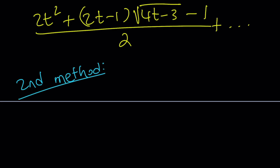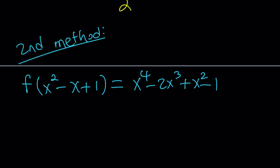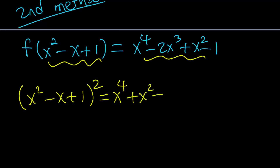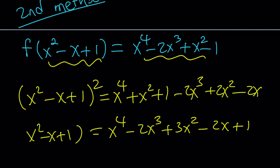The second method is much nicer and more elegant. We have f of x squared minus x plus 1 equals x to the 4th minus 2x cubed plus x squared minus 1. Here's what I'm going to do: I'm going to square the expression inside the parentheses. Why? Because I'm going to get a quartic, and I have a quartic on the right-hand side. Squaring x squared minus x plus 1 gives x to the 4th plus x squared plus 1 minus 2x cubed plus 2x squared minus 2x, which simplifies to x to the 4th minus 2x cubed plus 3x squared minus 2x plus 1.